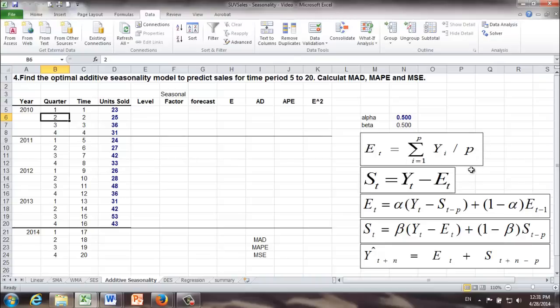P here is nothing but the number of time periods in a cycle. Most of the time, a cycle is one year. Here, the time period is quarter. One year has four quarters. So P is equal to four in this case.